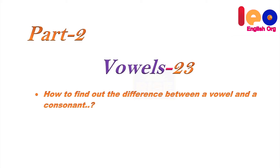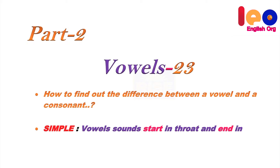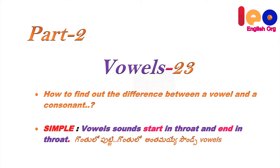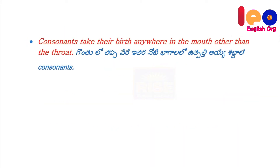Simple. Vowel sounds start in the throat and end in the throat. Consonants take their birth anywhere in the mouth other than the throat.